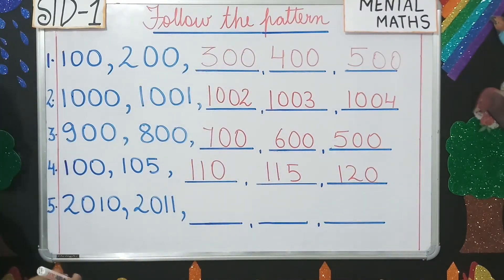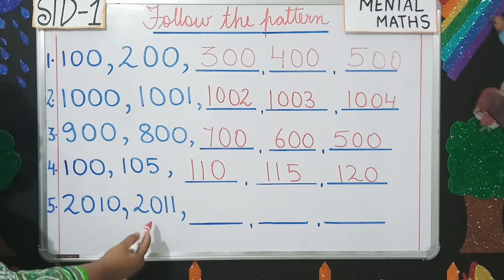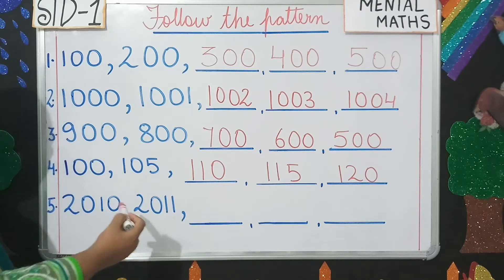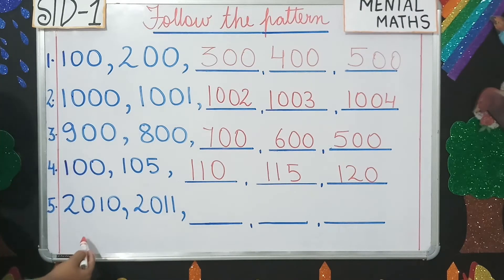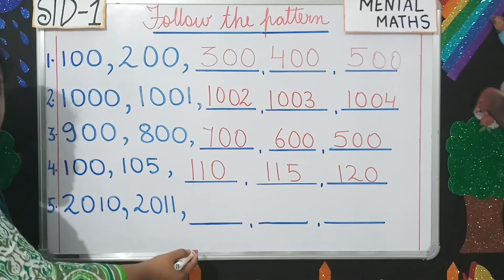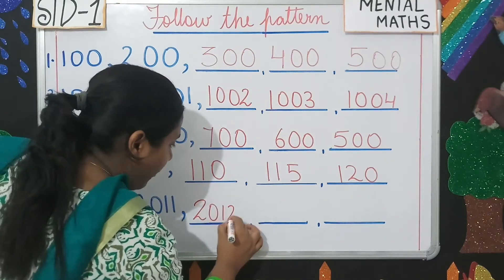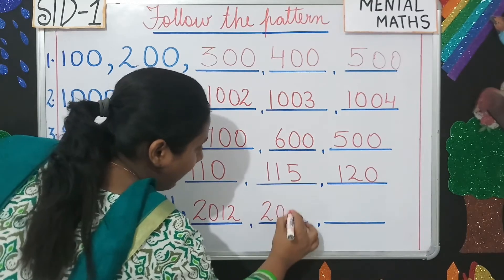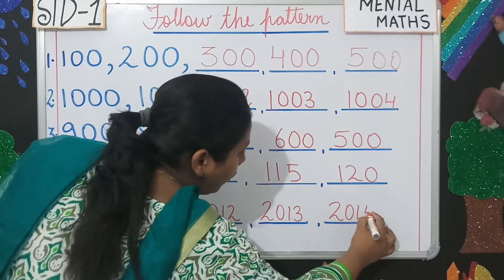Number five: 2010, 2011. Here there is only a difference of one number — we are just moving forward by one. So after 2010, if it is 2011, then after that it will be 2012, then 2013, and then 2014.